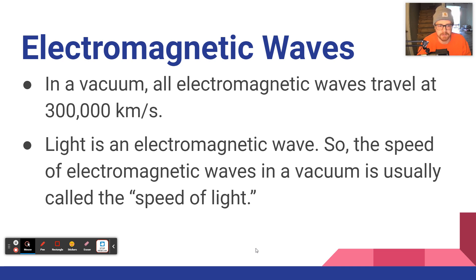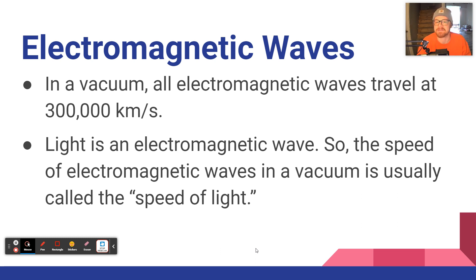In a vacuum, all electromagnetic waves travel at 300,000 kilometers per second — essentially the speed of light. So light is an electromagnetic wave. The speed of EM waves in a vacuum is usually just called the speed of light. It gets a bit different when you're here on Earth in our atmosphere.